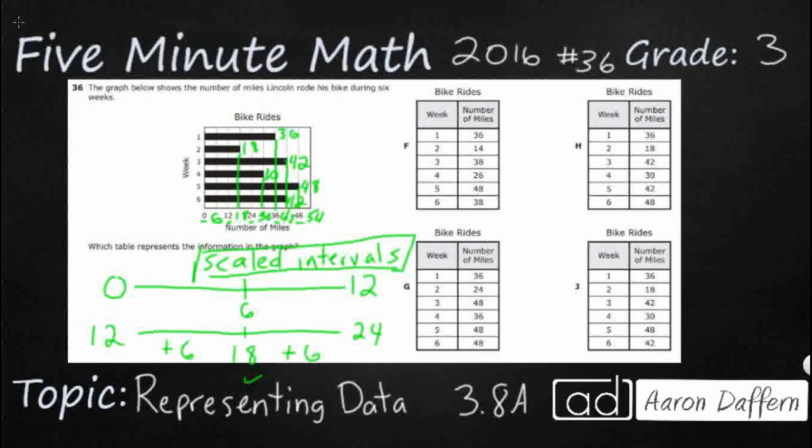So what we need to do is we need to take that information and we need to match it up. And quite honestly, the simplest way to do that, we can look at it from here. We can start going F, G, H, and J. But since our answer is going to be in a table, we might do that as well, and just kind of make our own table. I don't need to label it, but I'm just going to write one, and we said 36, two, and we said 18, three is 42, four is 30, five is 48.